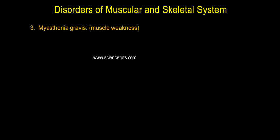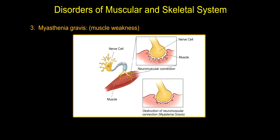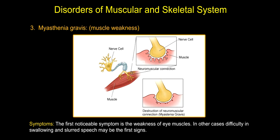Myasthenia gravis — muscle weakness. It is an autoimmune neuromuscular disease leading to fluctuating muscle weakness and fatigability. The first noticeable symptom is weakness of the eye muscles. In other cases, difficulty in swallowing and slurred speech may be the first signs.